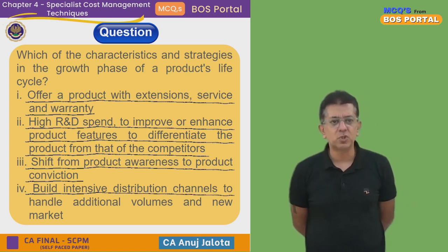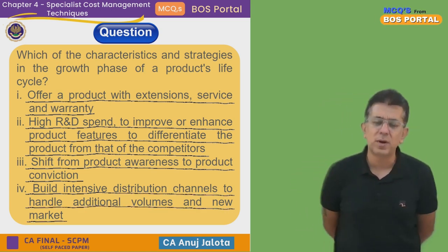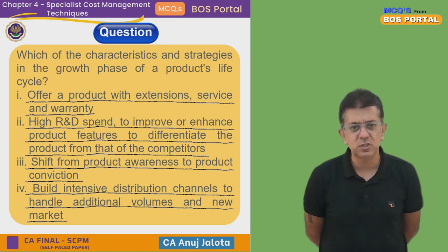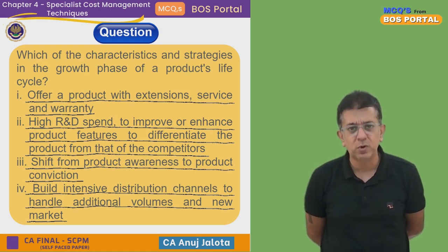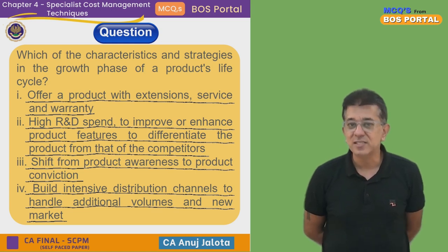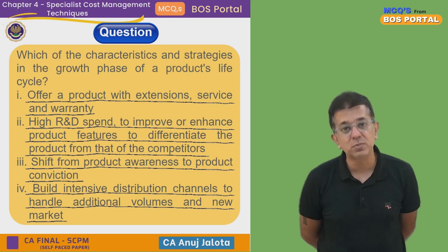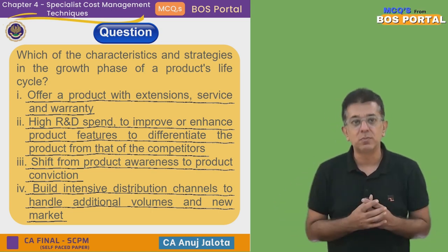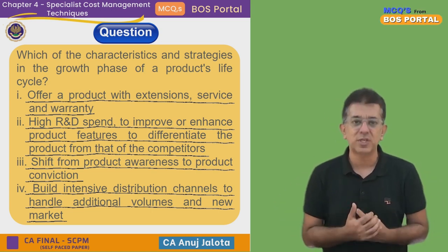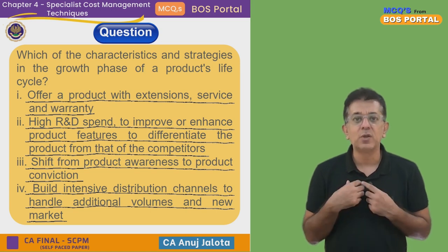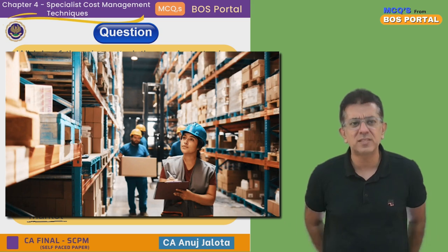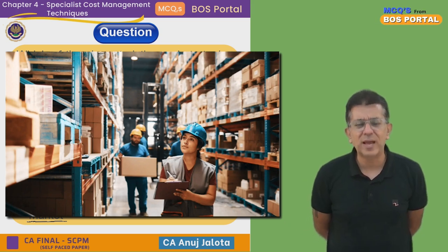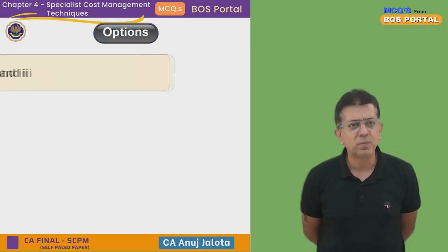Fourth option: build intensive distribution channels to handle new volumes and new markets. Of course, in the introduction stage volumes are less, but the moment you shift from introduction to growth stage, sales and profits start increasing at a very high rate, and so do customers. To tap these new customers, you'll have new distribution channels — for example, instead of selling to wholesalers you can start directly selling to retailers.